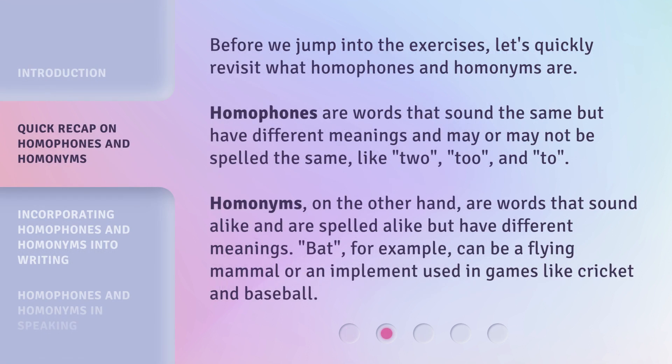Before we jump into the exercises, let's quickly revisit what homophones and homonyms are. Homophones are words that sound the same but have different meanings and may or may not be spelled the same — like "to," "too," and "two." Homonyms, on the other hand, are words that sound alike and are spelled alike but have different meanings. "Bat," for example, can be a flying mammal or an implement used in games like cricket and baseball.